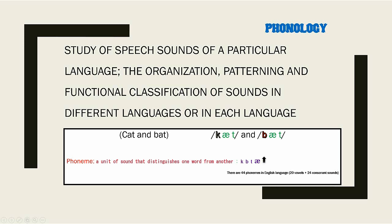For example, take two words: 'cat' and 'bat'. Both these words are the same except for one phoneme — the initial phoneme /k/ and /b/. When the initial phoneme /k/ is substituted for the phoneme /b/, the meaning changes. The organization and classification of sounds is done with a view to having a meaningful sound combination.